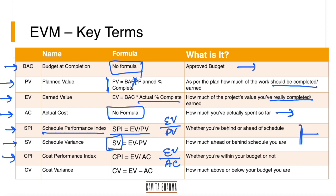CPI tells whether you're spending as per budget, more than allocated, or less. Cost Variance (CV) tells how much more or less you're spending than planned; formula: CV = EV − AC.